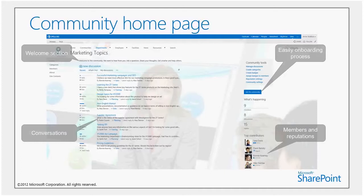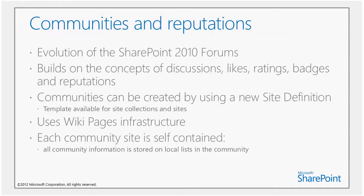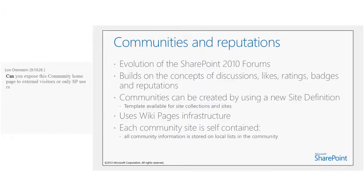We want to encourage participation — we don't want people to engage for the first week and then disappear. Through members, reputations, and badging, we have tools to do that. Communities are created using a new site definition, and you can do that at the site collection and site level. When we create a new post within a community, we use the wiki pages infrastructure, so it's very freeform — we can add rich text beyond simple plain text.